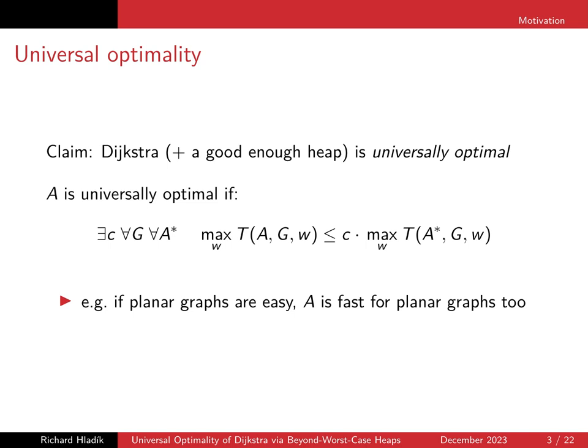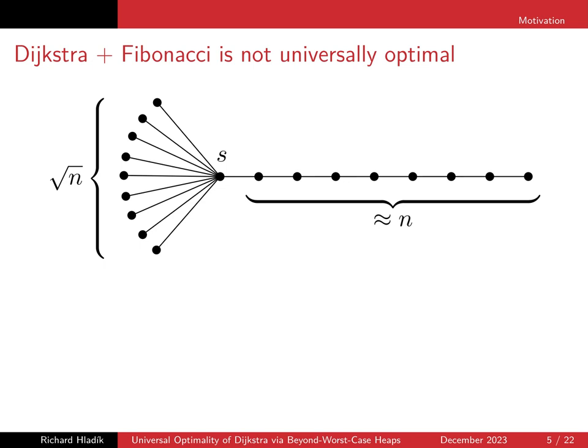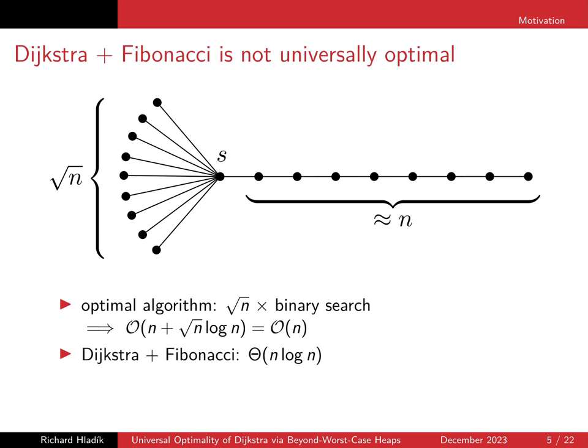So why not just use Fibonacci heaps? We can take an instance with roughly n vertices in a path and then some square root of n vertices dangling from the source vertex. The optimal algorithm runs in linear time because to order the vertices by distance, the path is already correctly ordered, so we just need to insert those square root of n vertices into this ordering. Binary search takes sublinear time in total, giving linear time complexity overall. On the other hand, Dijkstra's algorithm with the Fibonacci heap can take up to Θ(n log n) time.